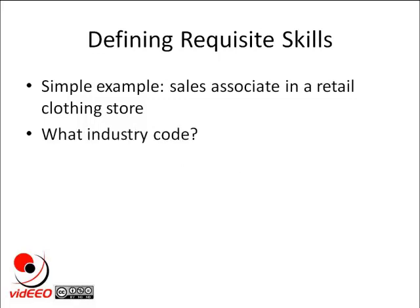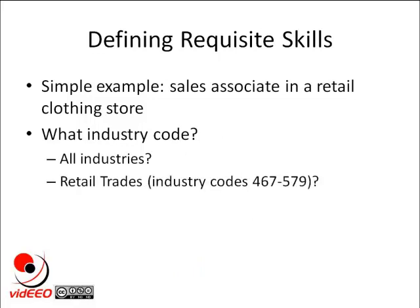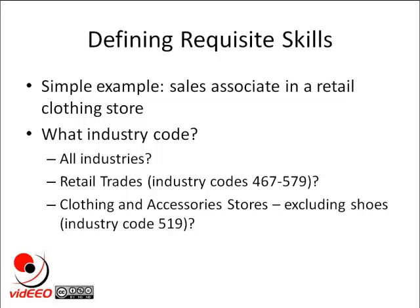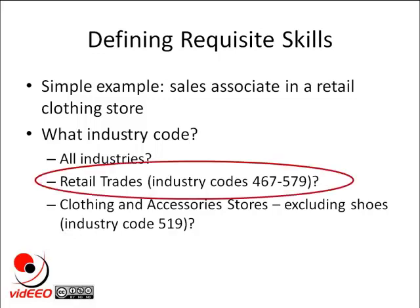What industry code are we going to use? We could look at all industries, or narrow it down to just retail trades, or even further to only clothing and accessories stores. The problem with using the narrowest possible definition is that the availability estimate you get is likely to be highly dependent on the characteristics of your own workforce — as we narrow our definition, our sample size gets smaller, and your firm will likely be a big part of that sample. On the other hand, we don't want a definition that's too broad. In this case, we'd use the middle-of-the-road approach and focus on retail trades, since retail salespersons in non-clothing stores likely have highly transferable sales skills.